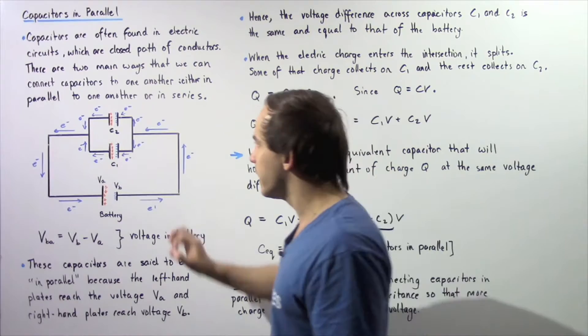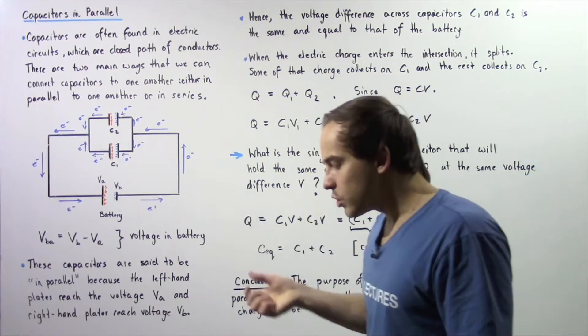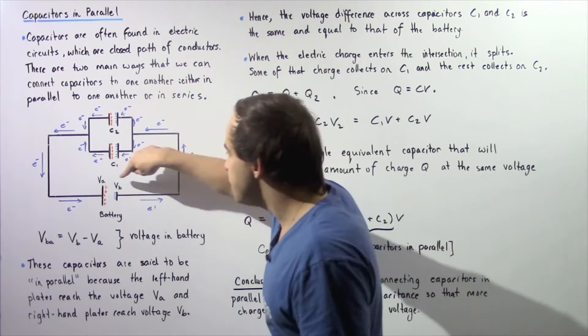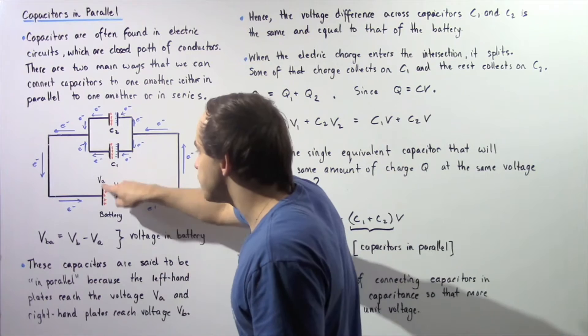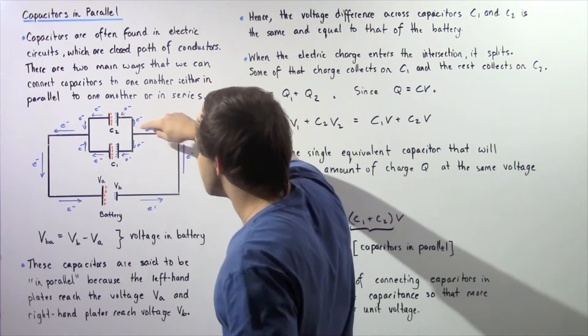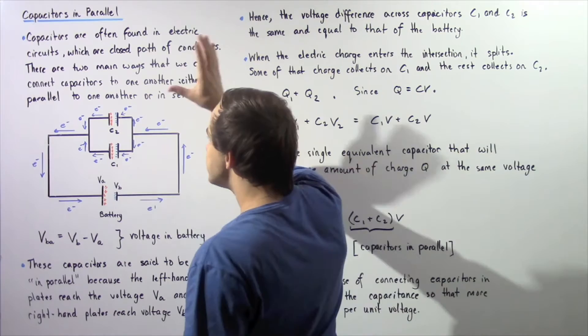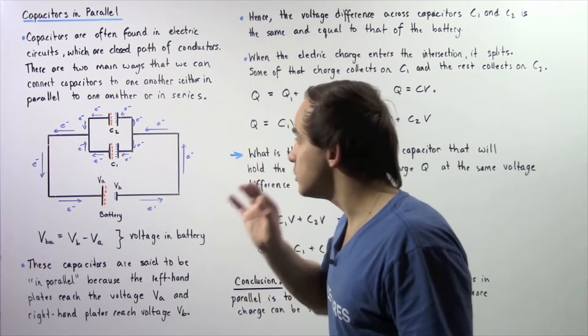Because of this voltage difference, electrons will begin to flow and accumulate on one side of our parallel plates. Electrons travel from the lower potential to the higher potential. The plate at VA has the lower potential, so electrons begin flowing from this location toward the higher potential plate. They reach an intersection, where they split — some of those electrons end up on the plate of C1 and some end up on the plate of C2.